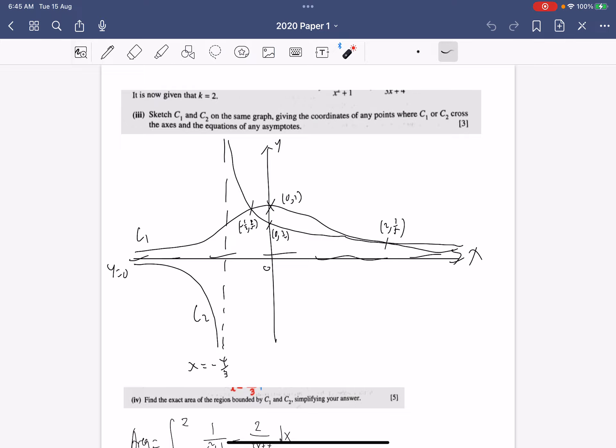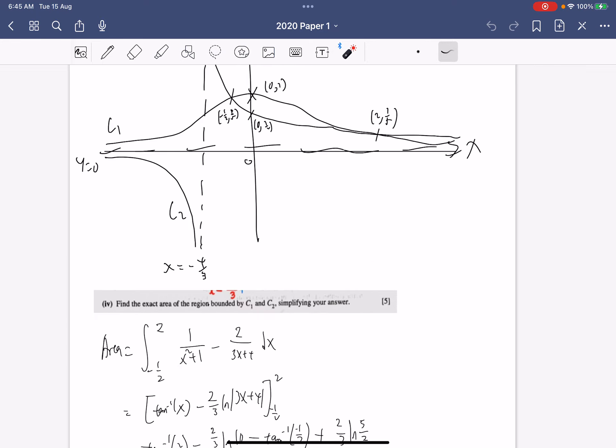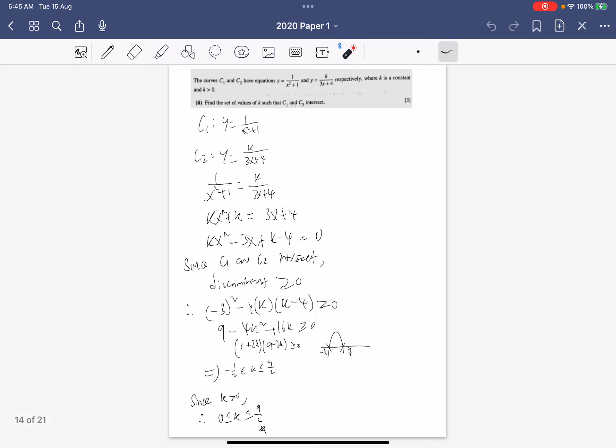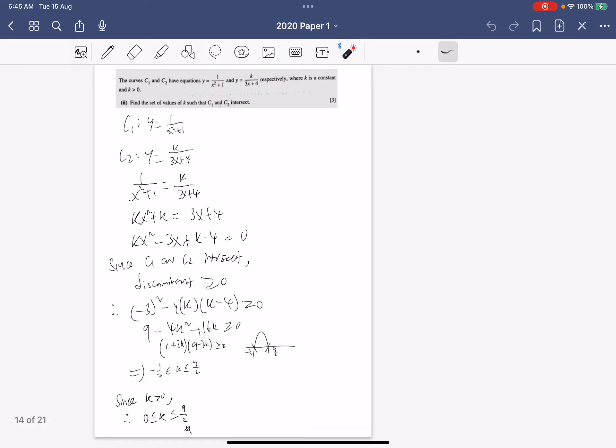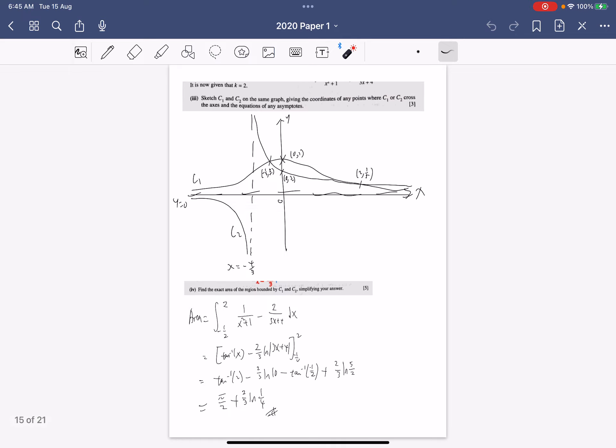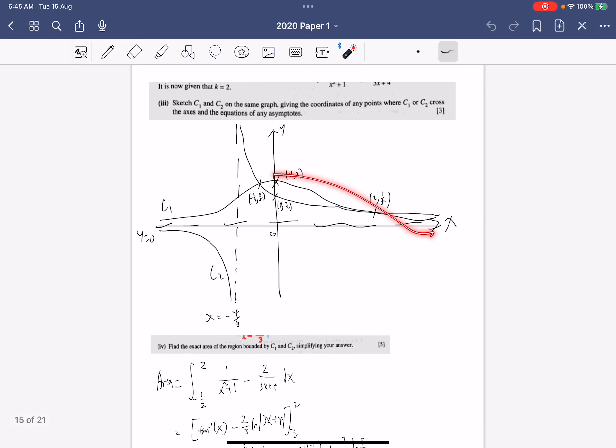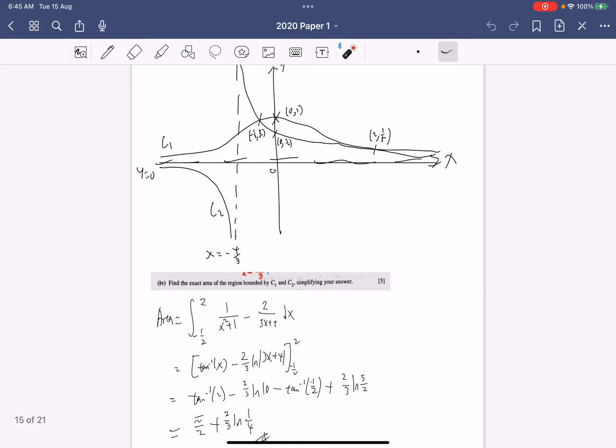It is now given that k equals to 2 and we're going to sketch c1 and c2. So there are two ways you can do so, you can just plug into GC and see how the curve look like, or you roughly know the shape of the curve, you can just draw it out. And so what you should get is this following graph where c1 is this and c2 is this, with asymptotes and everything labeled. So this shouldn't be too hard, you should have known how to draw your graphs.